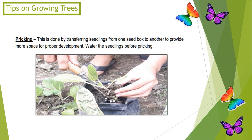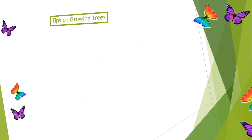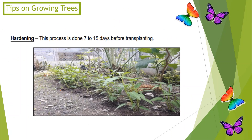Pricking: this is done by transferring seedlings from one seed box to another to provide more space for proper development. Water the seedlings before pricking. Number 7: Hardening — this process is done 7 to 15 days before transplanting.